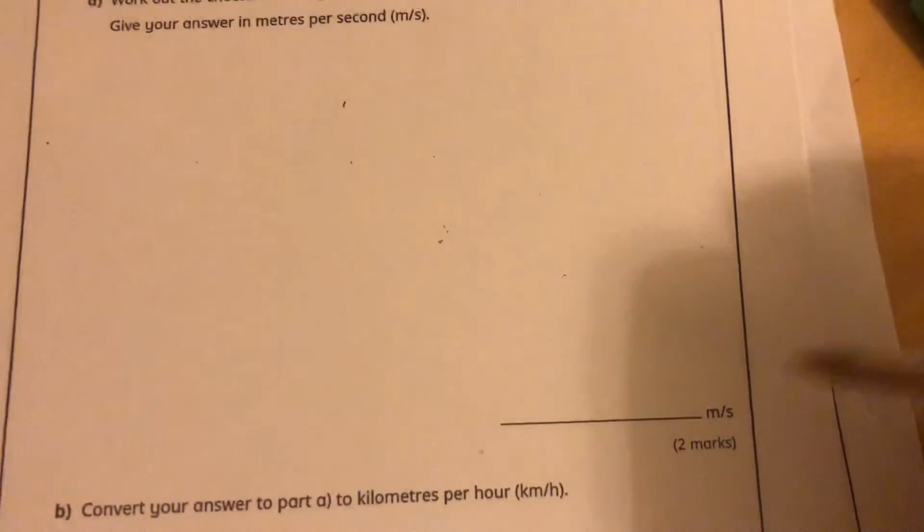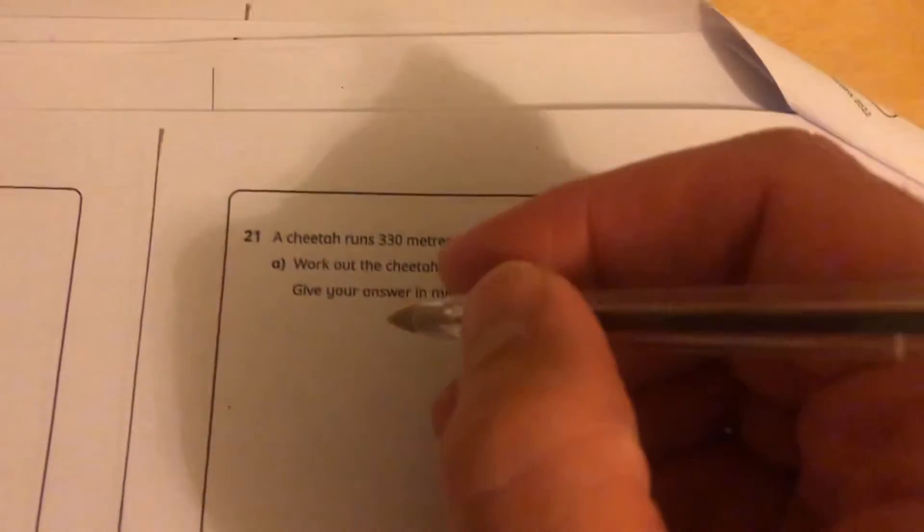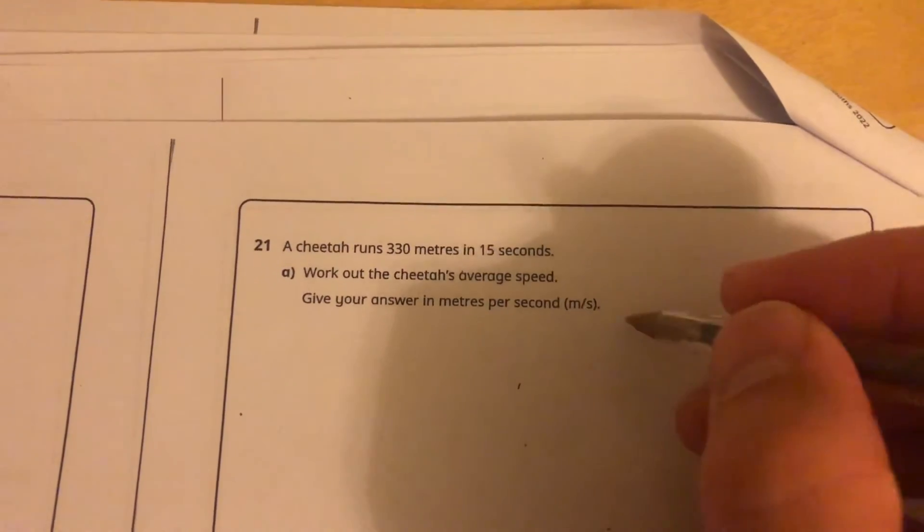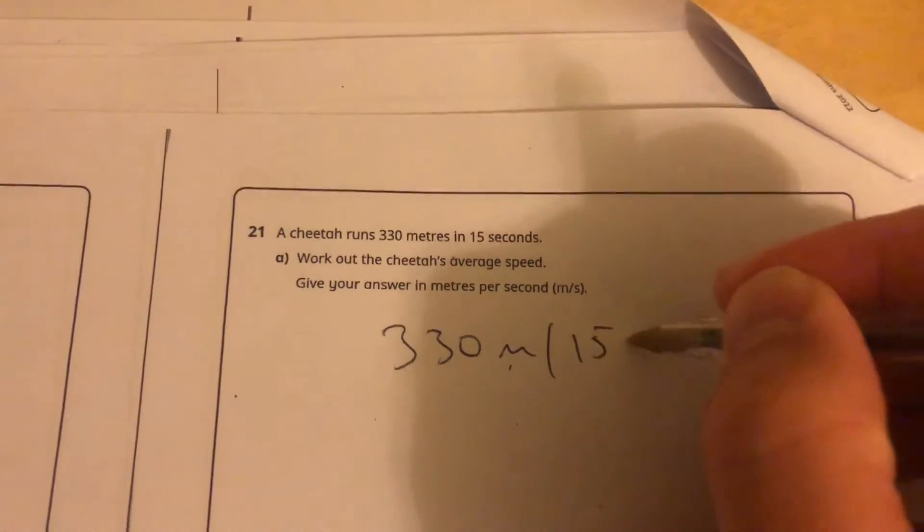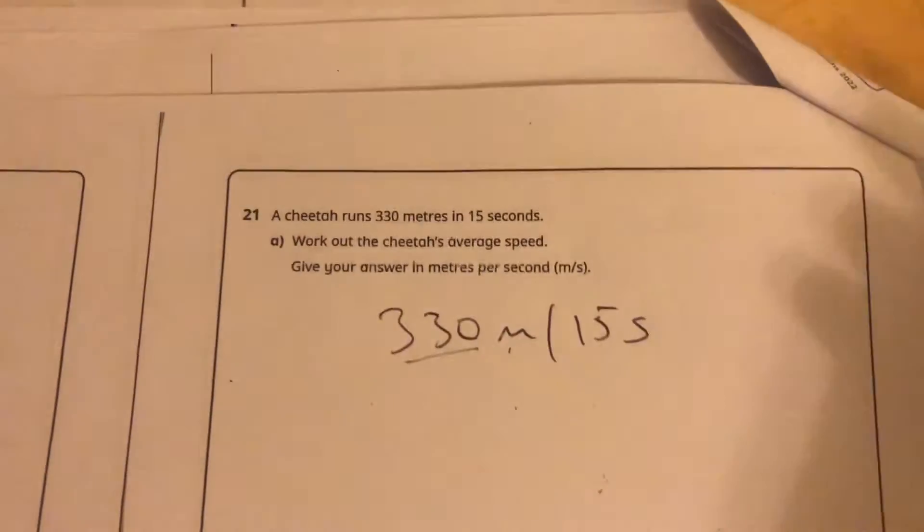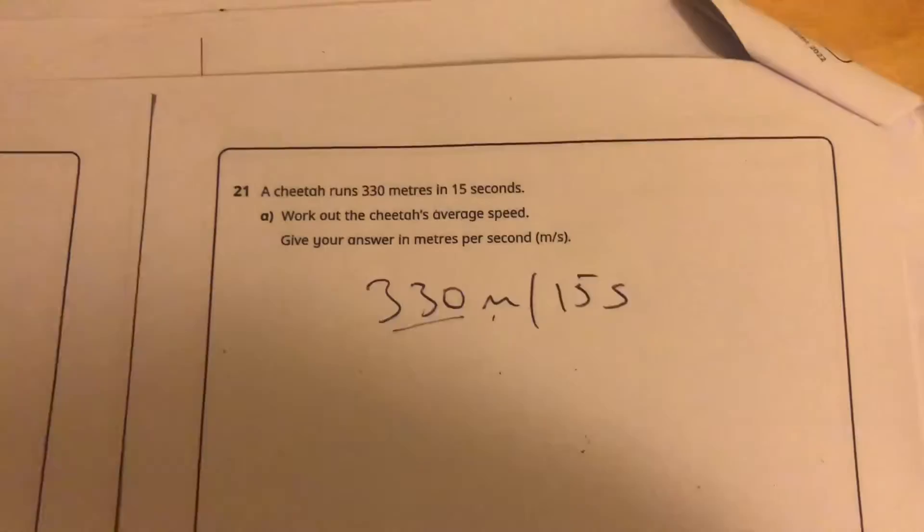This one here, 330 meters in 15 seconds. Check the marks, it's two marks. So if I want the answer in meters per second, the cheetah's average speed, if I just do 330 meters in 15 seconds, I'd have to divide that by 15. At least get that started. I'll come back to that one later. Converting that to kilometers will take a bit more time.